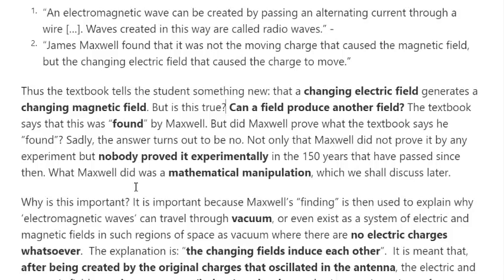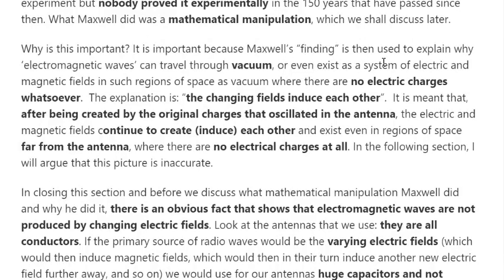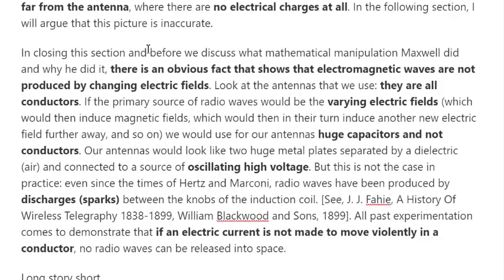What Maxwell did was a mathematical manipulation, which we will discuss later. This is important because Maxwell's finding is used to explain why electromagnetic waves can travel through a vacuum — existing in regions of space where there are no electric charges. The explanation given is that the changing fields induce each other: after being created by the original charges oscillating in the antenna, the electric and magnetic fields continue to create and induce each other far from the antenna where there are no electrical charges at all.